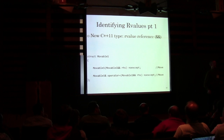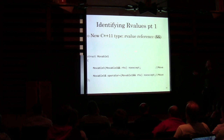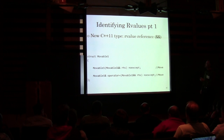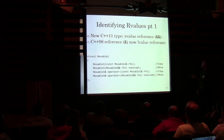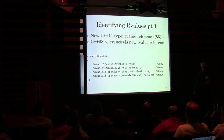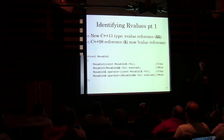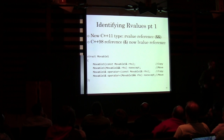We're going to try to find a way to get a hold of those R-values. We're adding a new type called the R-value reference, and it's got two ampersands. We still have the same old C++98 reference — a single ampersand — and that's now called an L-value reference. In terms of the standard, you've got R-value references and L-value references, and all that does is indicate how many ampersands you've got.